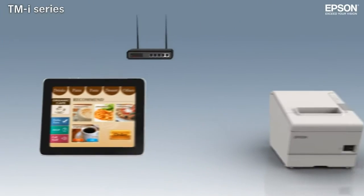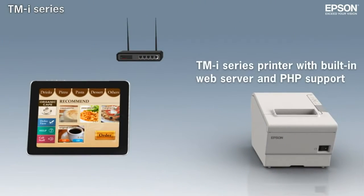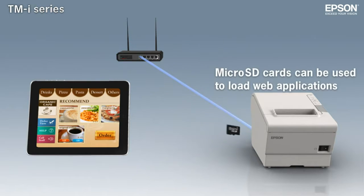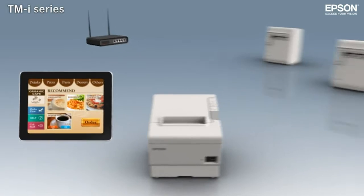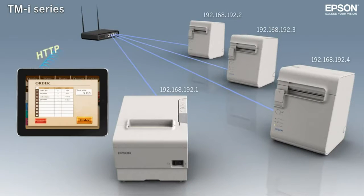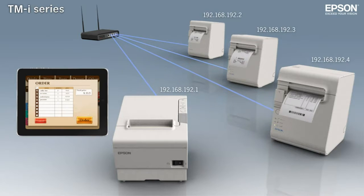With their built-in web server and PHP support, TMI series printers are a low-cost way to add web application printing power to small networks. A single TMI printer can be set up as a hub and used to control conventional POS printers on the same network.